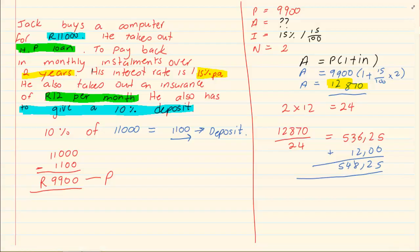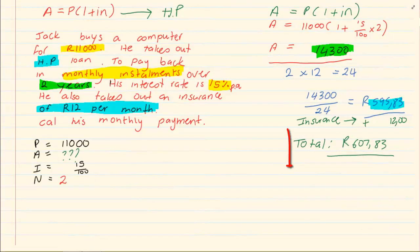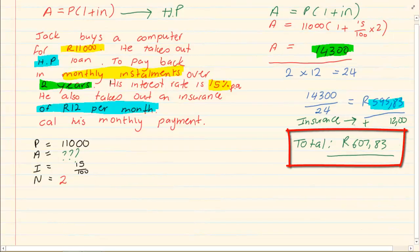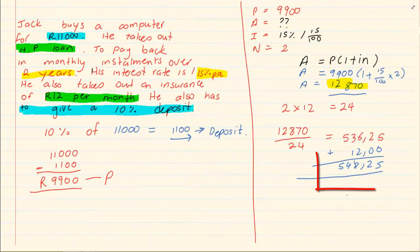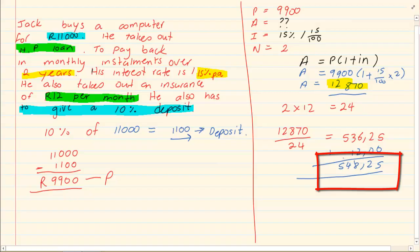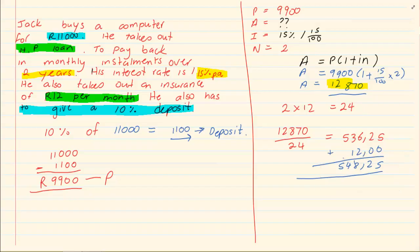So his total monthly payment is 548 Rand 25 cents. Now look at the difference. In the first one it's 607 Rand 83 cents because we didn't have a deposit, but in the second one it's 548 Rand 25 cents. Now let us continue and add to this question.